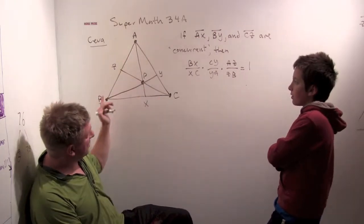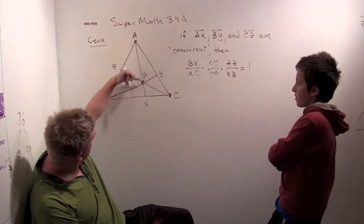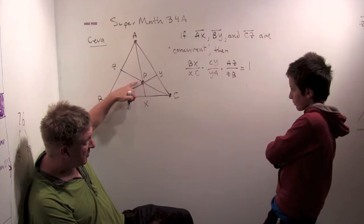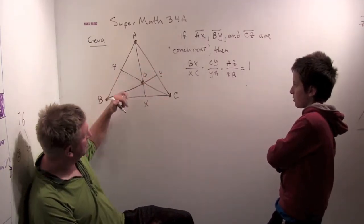If you have a triangle ABC, see that triangle? Yep. And you take a line segment from each vertex, and you make them intersect in a point in the middle of the triangle. It's called concurrent. So if AX, BY, and CZ are concurrent...